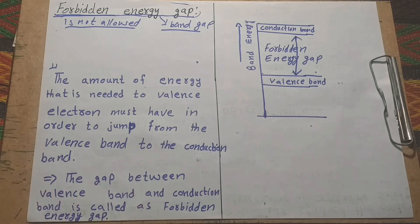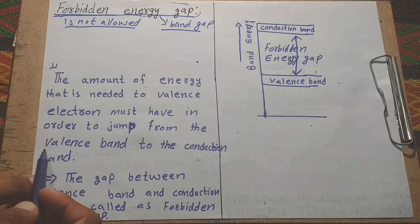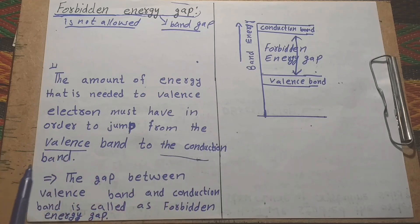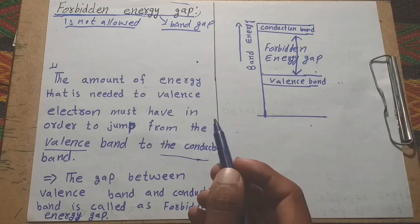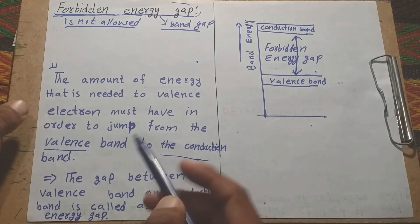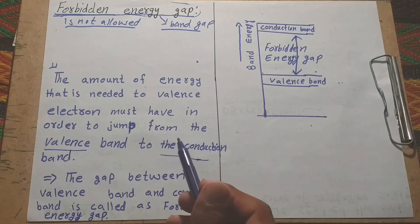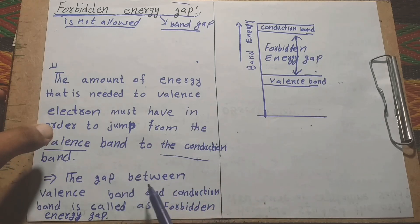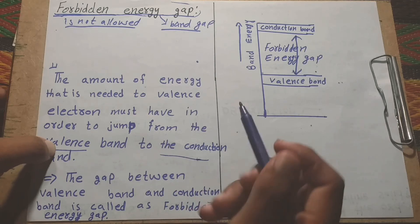When electrons get enough energy, they jump from the valence band to the conduction band. This energy required is known as energy gap or band gap. The gap between the valence band and conduction band is called the forbidden energy gap.